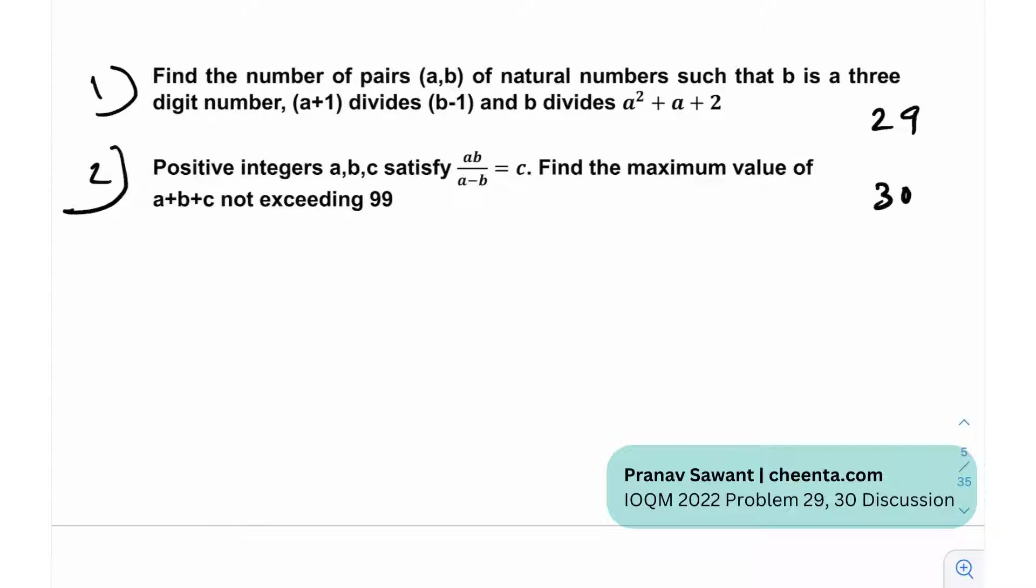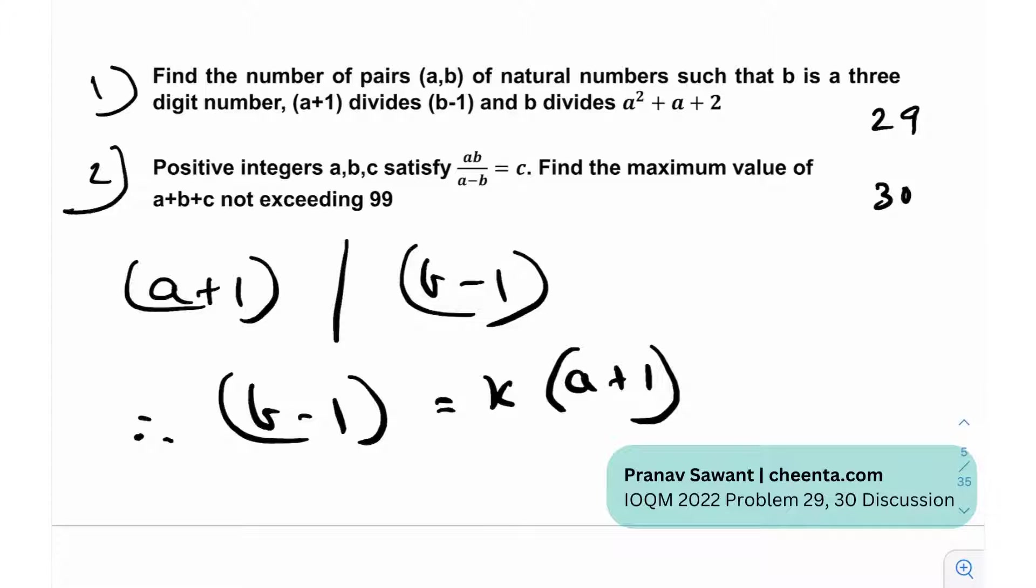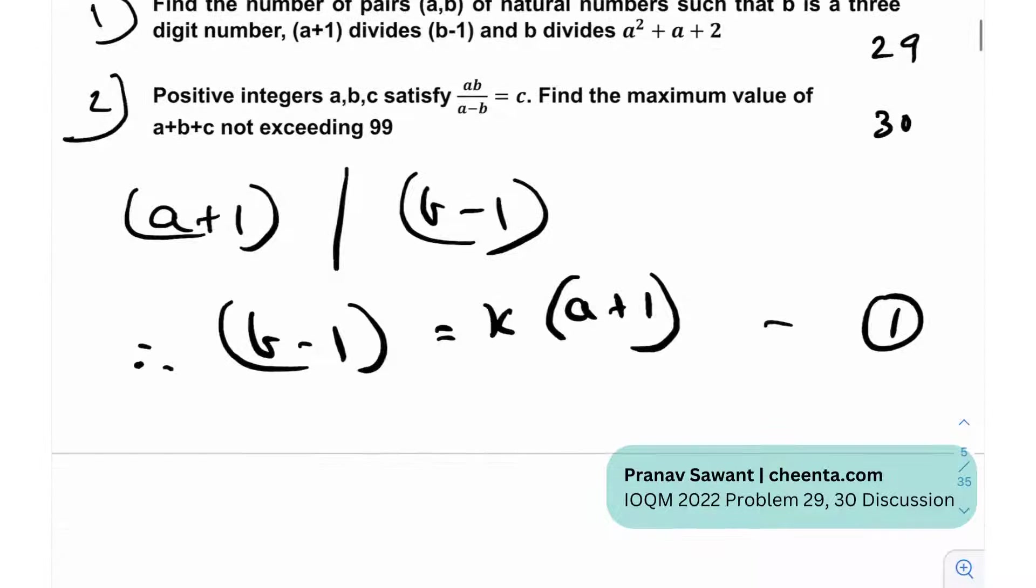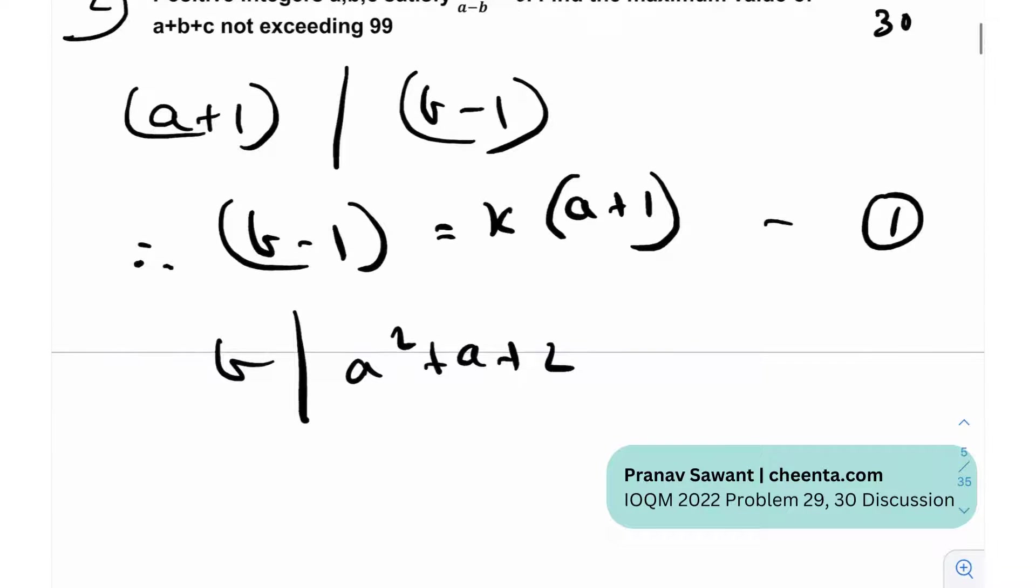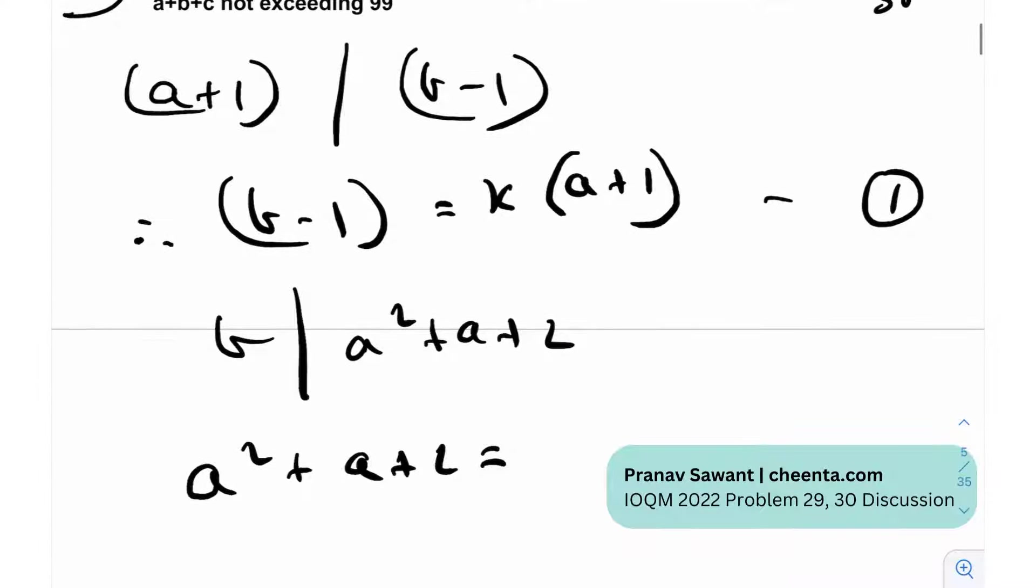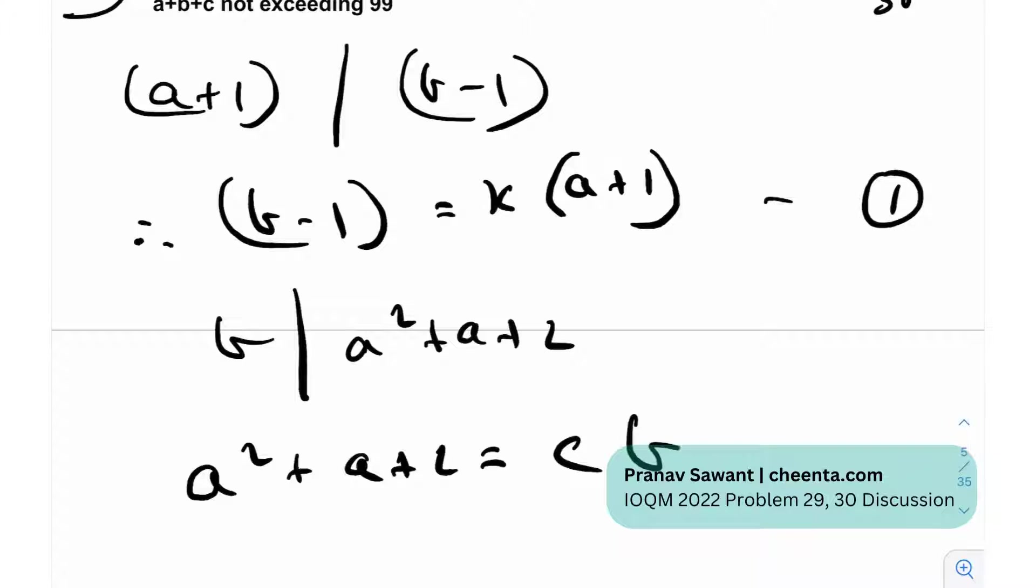Let's see how we can proceed with that. (a+1) divides (b-1), so therefore b-1 is K times (a+1). Let me write this as equation number 1. And also we have b divides a² + a + 2, so a² + a + 2 is let's say C times b. Let's put this as equation number 2.